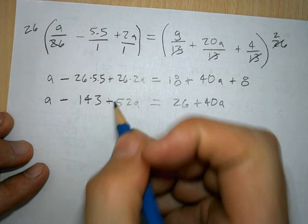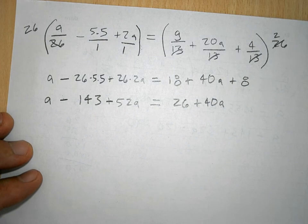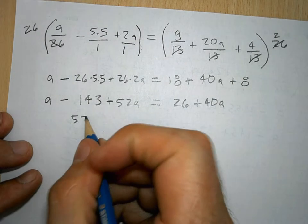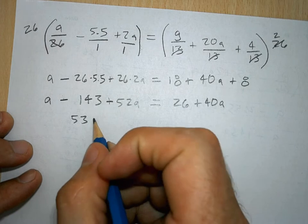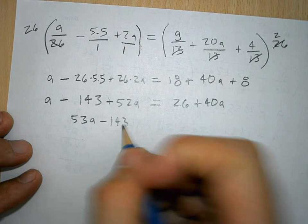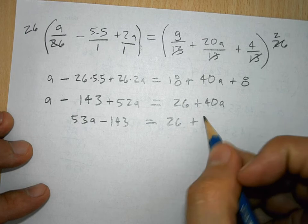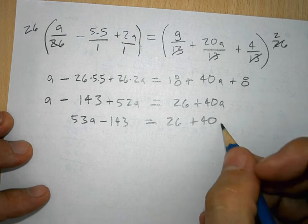So, now we have A minus 143 plus 52A. We can combine like terms. So, we have the A plus 52A is 53A minus 143, and all that equals 26 plus 40A.